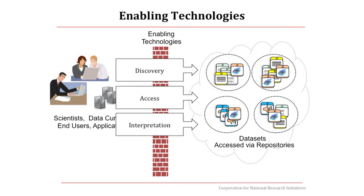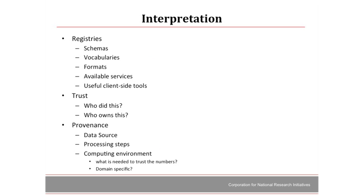You found it, you've gotten it, now you have to make sense of it. Here's a big difference between article publishing and data publishing: you put a journal article in front of someone, assuming they understand the language, they understand what they're looking at. They can even distinguish a journal article from an auto repair manual. Give someone a bunch of numbers and you need more information — the numbers are not self-explanatory. So here you need more registries, schemas, vocabularies, formats, available services, user-side tools. You need a lot of descriptive metadata around datasets, not just for deep understanding but to make sense of them at all.